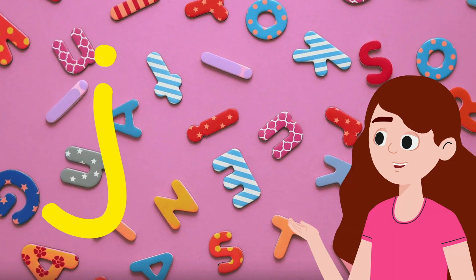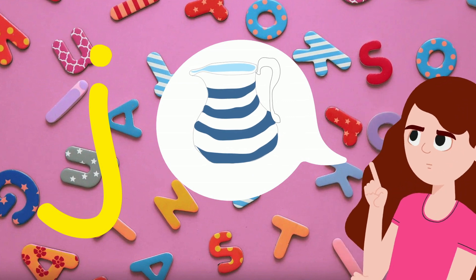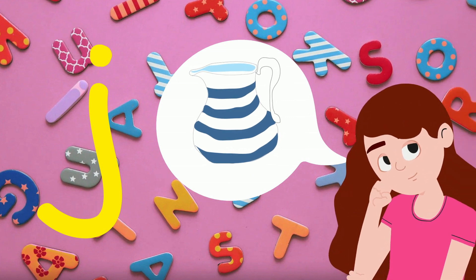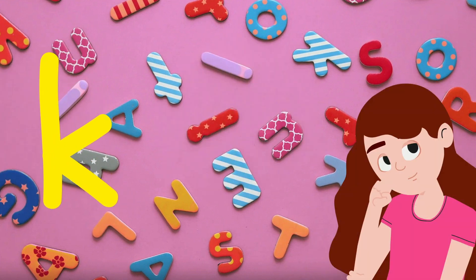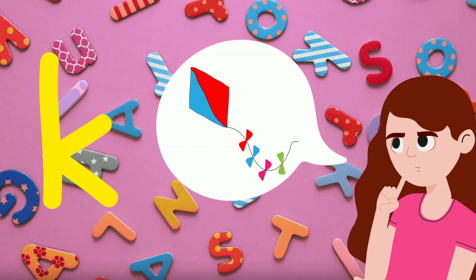J sounds like J, J. Jug. K sounds like K, K. Kite.